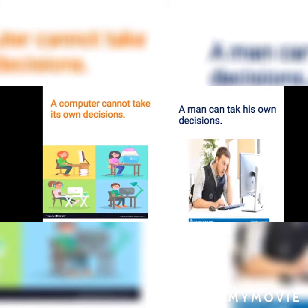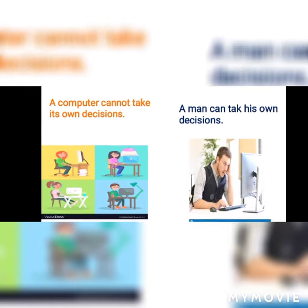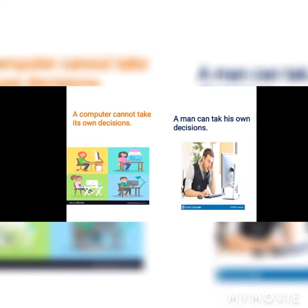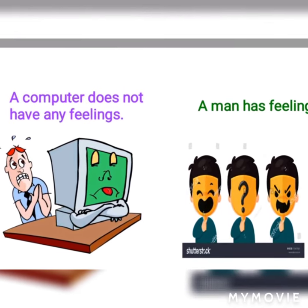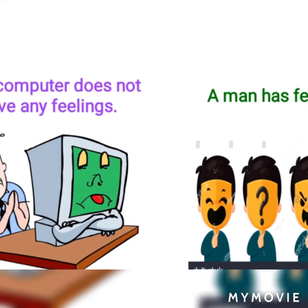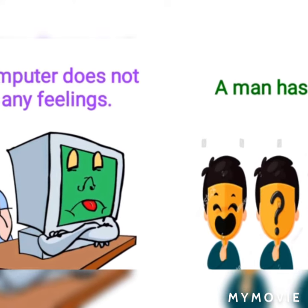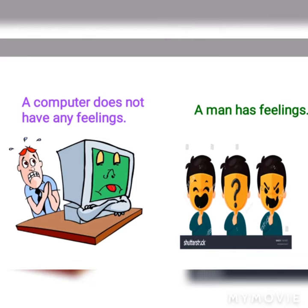A computer does not have any feelings. If you hit a monitor, it does not react. But a man has feelings. For example, if you get hurt, you will feel the pain.